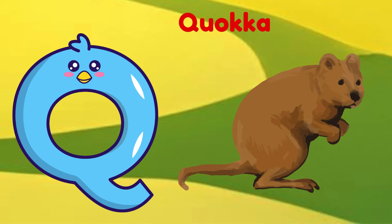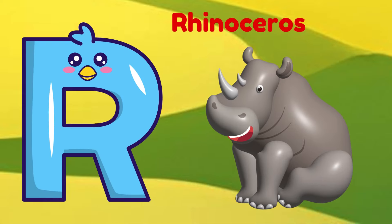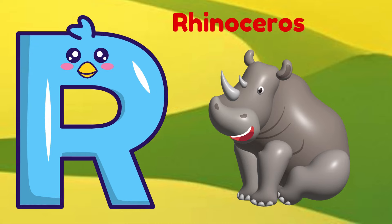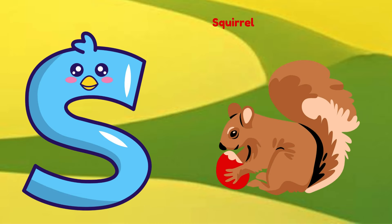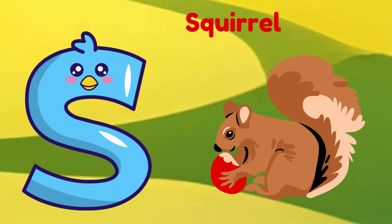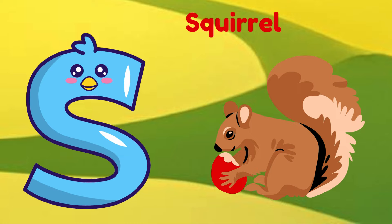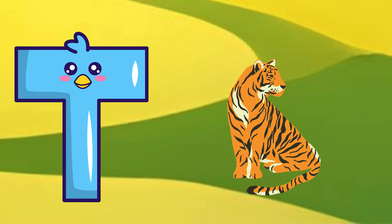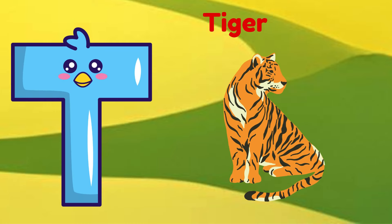Q is for Quokka. Qu, Qu, Quokka. R is for Rhinoceros. R, R, Rhinoceros. S is for Squirrel. S, S, Squirrel. T is for Tiger. T, T, Tiger.